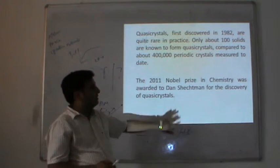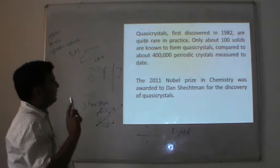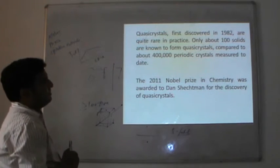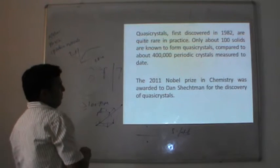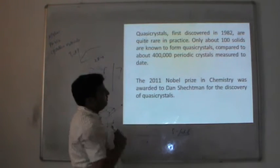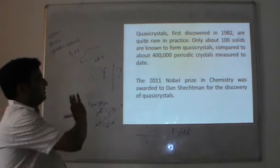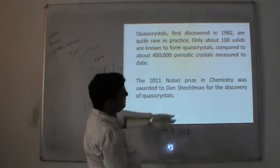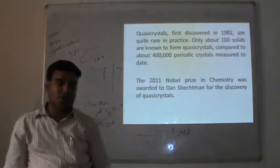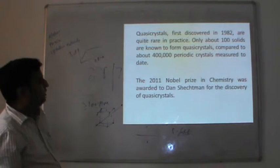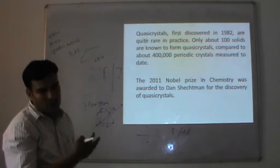Quasi-crystals are ordered but not strictly periodic. Quasi-crystals, first discovered in 1982, are quite rare — only about a hundred of these are known compared to the vast number of regular crystal types. The 2011 Nobel Prize in Chemistry was awarded for the discovery of quasi-crystals.